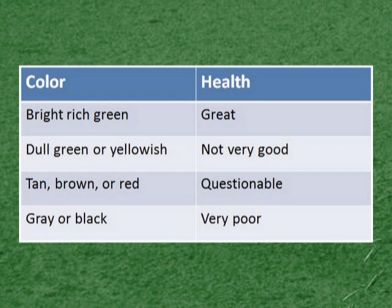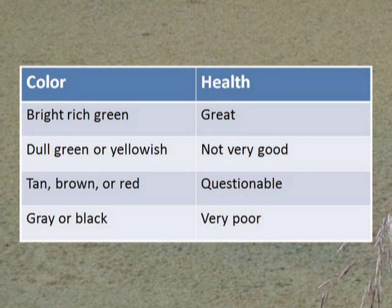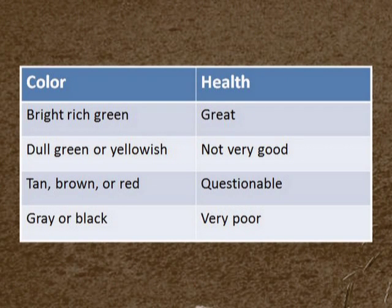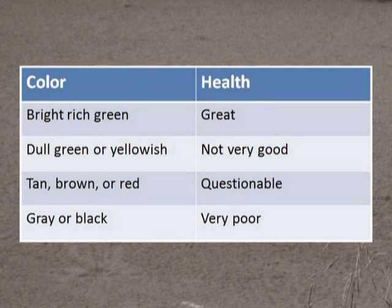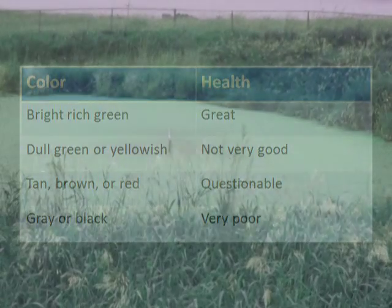Lagoon color is a good indication of the lagoon's health. The lagoon should be a bright green color because these green algae are an important part of the treatment process. Dull green, yellowish, tan, brown, or red colors show that conditions are not very good, and the lagoon has different algae that do not provide good treatment. A brown color may indicate that soil is eroding into the lagoon. Gray or black colors indicate anaerobic conditions may exist, so the lagoon is not treating wastewater well. Odors are probably present.